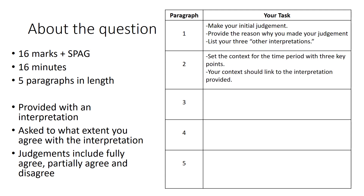Our second paragraph is context. We have to make sure we make it clear we understand what was going on at the time in question, and the context we provide should link back to the interpretation that's already been given. Aim to have about four or five sentences of context, making sure we're hitting that magic number of three key points.